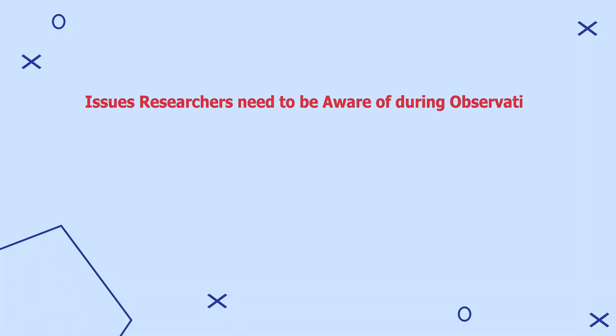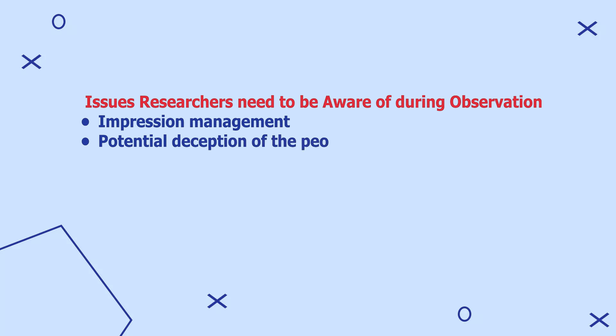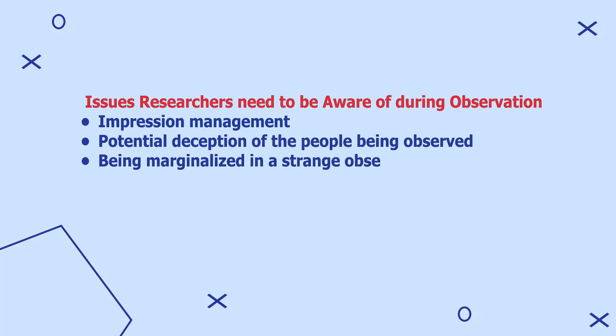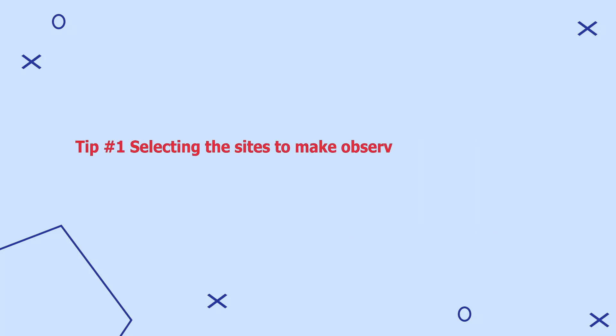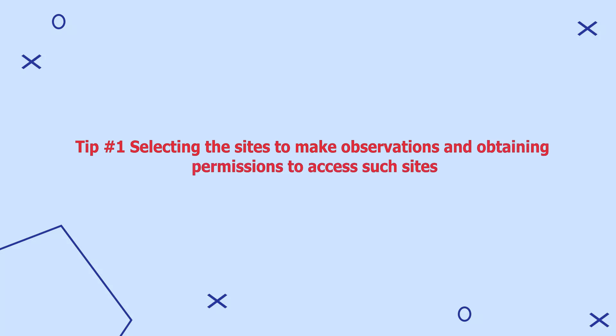When conducting observations, the researcher will need to be aware of issues such as: one, impression management; two, potential deception of the people being observed; and three, being marginalized in strange observation settings. Here are some tips researchers should follow during observations. Tip number one: selecting the ideal sites to make observations and obtaining all the necessary permissions to access such sites.